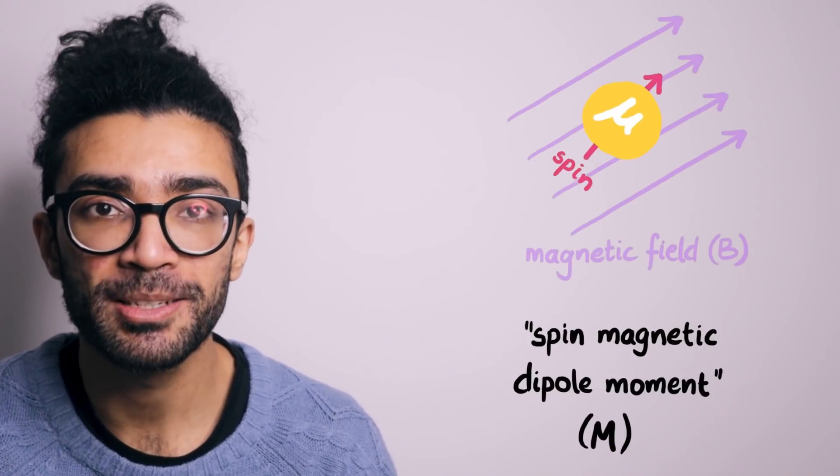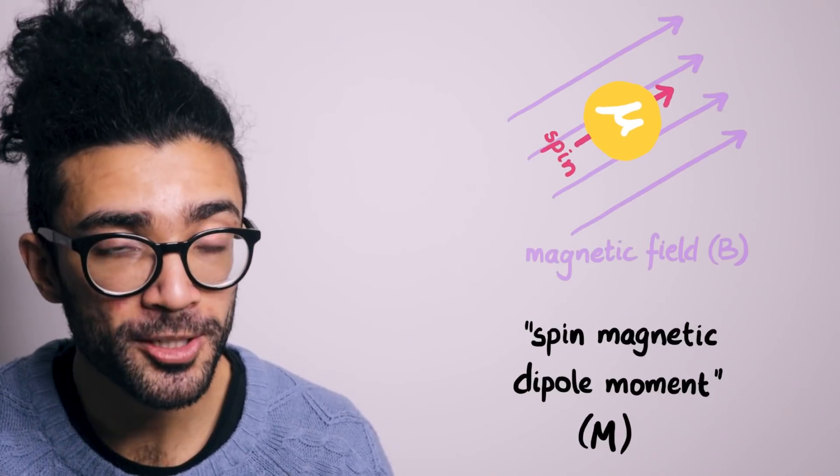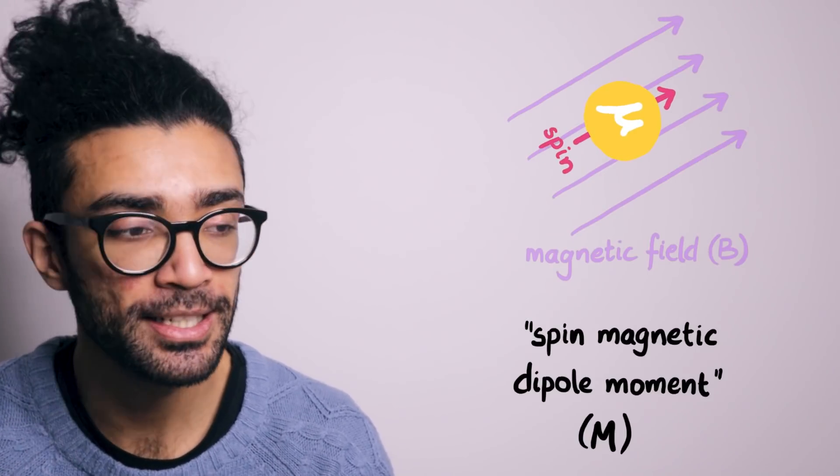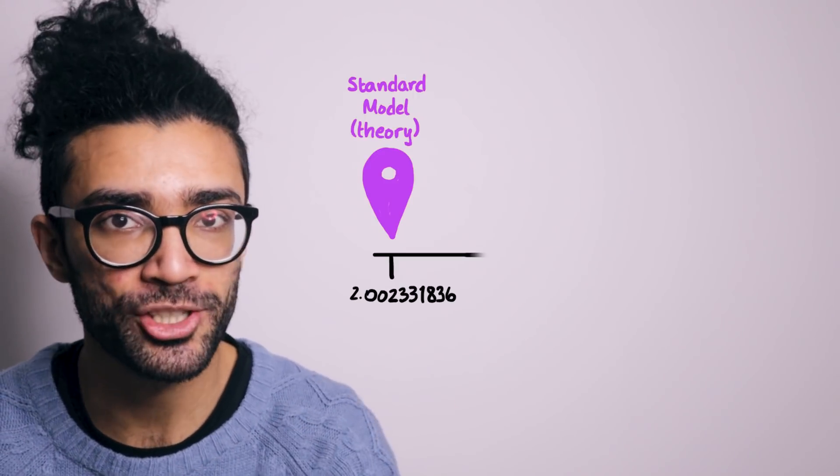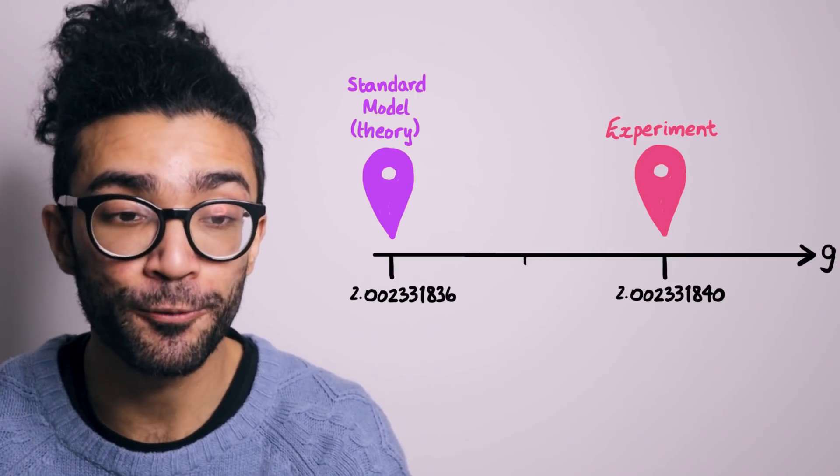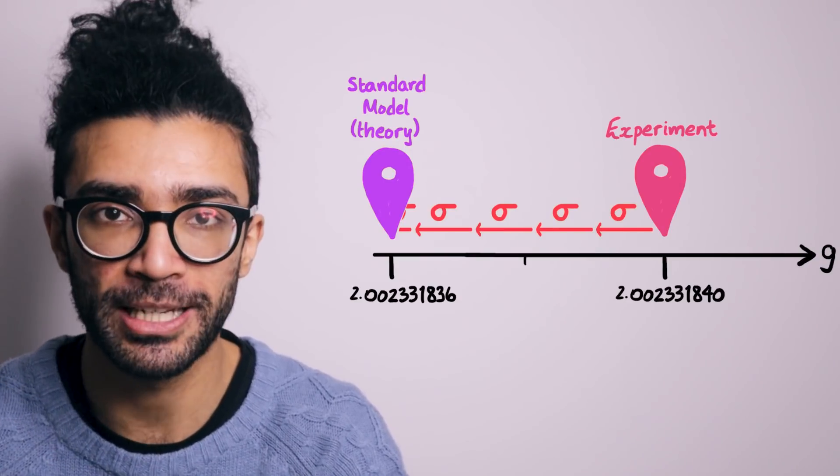So TLDR, the spin magnetic dipole moment of a muon is slightly larger than expected if we account for all of the physics that we currently know. The discrepancy between the theoretical prediction and the experimental measurement is 4.2 sigma as of when I'm making this video.